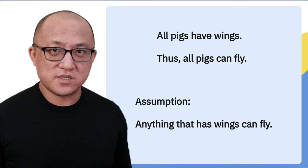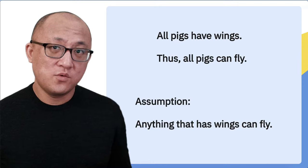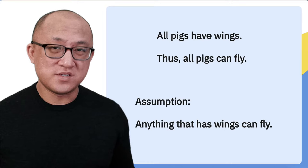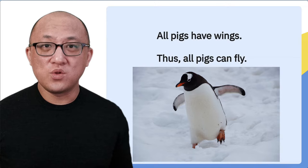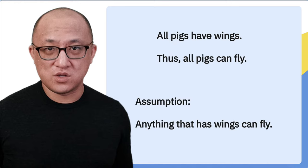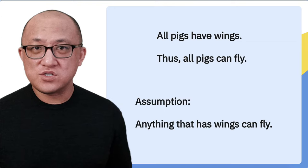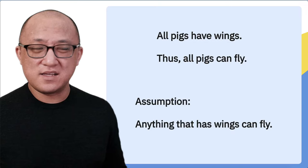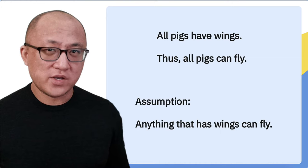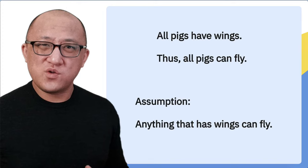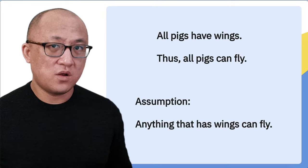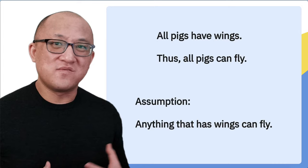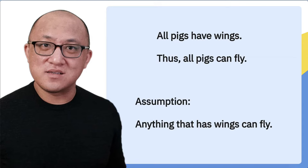That is a sufficient assumption, because if it were true, it would definitely guarantee that because pigs have wings, they can fly. But it's also a necessary assumption, and it would be the correct answer to a necessary assumption question as well. Why? Because if it were not true that anything that has wings can fly — if there were some things with wings that could not fly — then you would no longer be able to get from the premise that pigs have wings to the conclusion that pigs can fly. A lot of students who see this type of answer on a necessary assumption question would think it's wrong because it's too strong, or they'd recognize it's sufficient and say it's not necessary. But that line of reasoning is totally wrong. Whether something is sufficient has no bearing on whether it's necessary. Banish that from your mind.